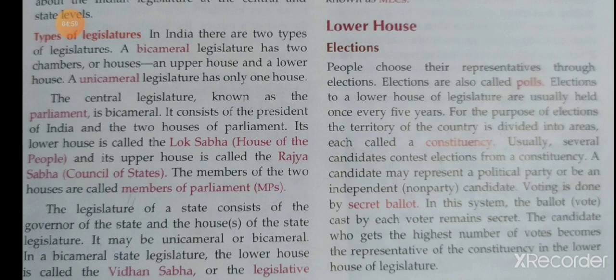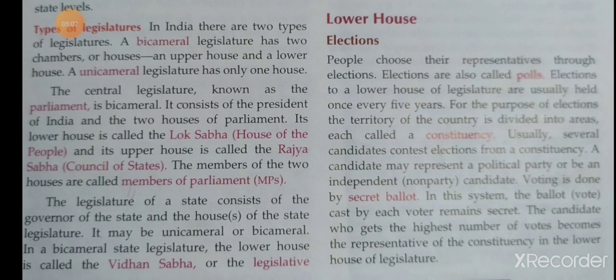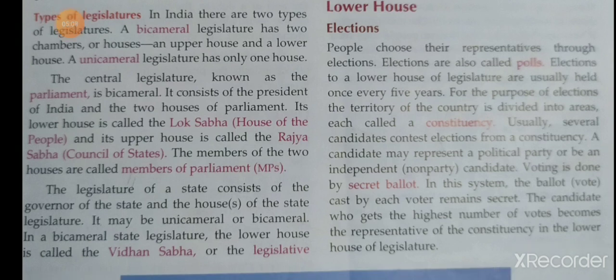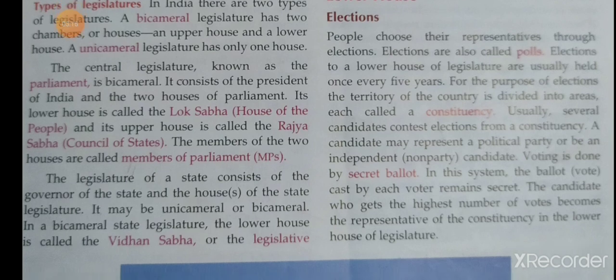The Election Commission sets up polling booths — places where people cast their votes. It also provides ballot papers and electronic voting machines.